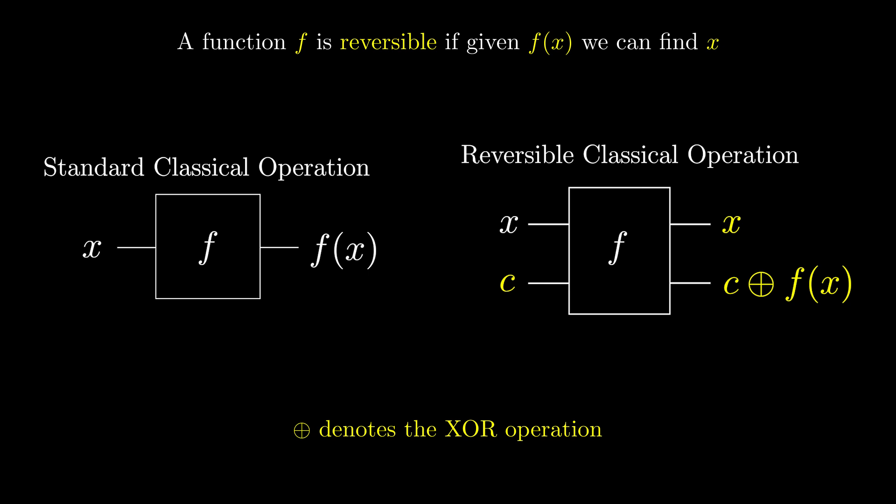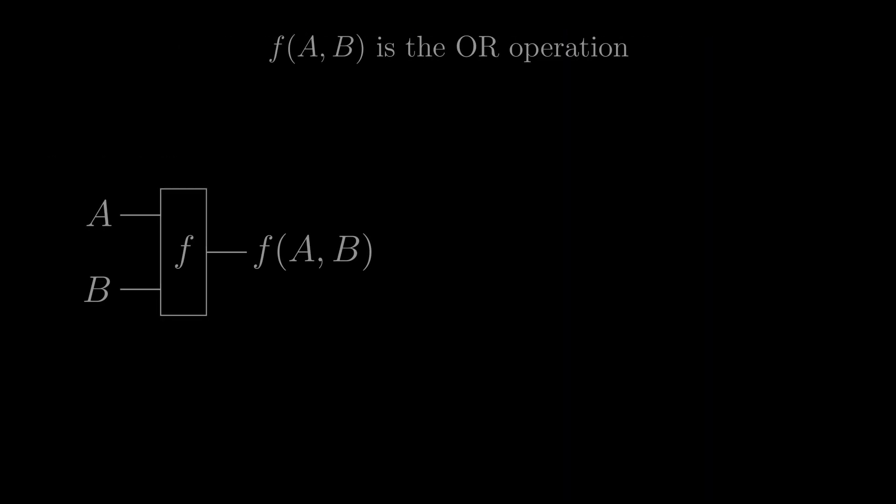Let's look at converting the OR gate to a reversible operation. Here is the normal OR gate, and here is the reversible OR gate. As you can see, we input another bit, c, and return it exclusive OR with the output.